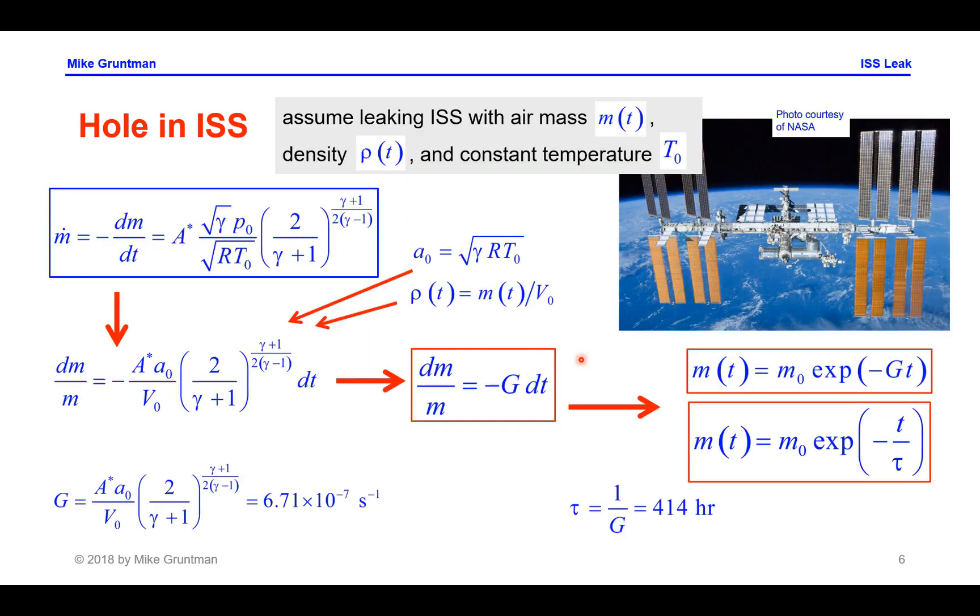Now let's consider what will happen with time if we have such a leak for a long time. Let's assume we have a station with the mass inside as a function of time, density as a function of time, and let's assume the temperature remains constant inside the station. So we can write the equation for m dot or mass flow rate, expressing it through the area of the hole A star, the nature of the air inside the station expressed through gamma, the ratio of specific heat and the gas constant R, and pressure and temperature inside the station.